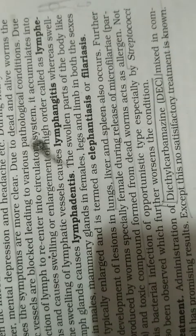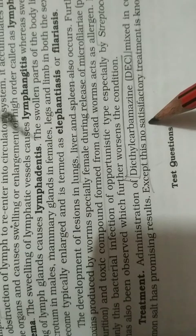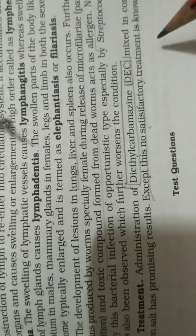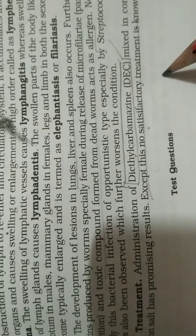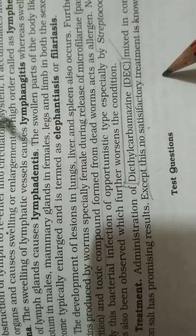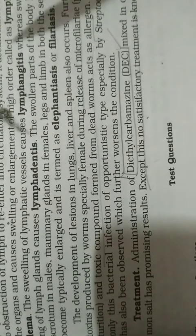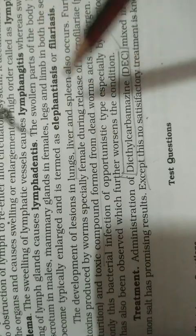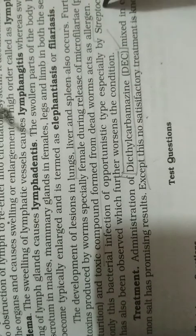For treatment, since it is a helminth, an anti-helminthic drug is used. DEC (diethylcarbamazine) is the anti-helminthic drug used to cure this disease. In summary, we have studied the morphology, the digenetic life cycle with the mosquito as secondary host and man as primary host, the important microfilaria larva showing circadian rhythm and non-inoculative mode of transmission, and the diseases caused — elephantiasis, lymphangitis, and lymphadenitis. That's all about Wuchereria bancrofti.